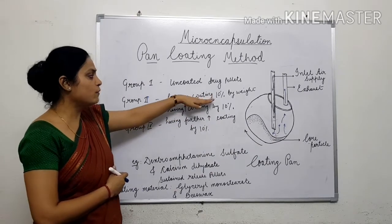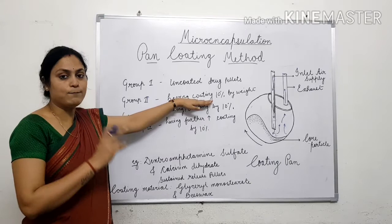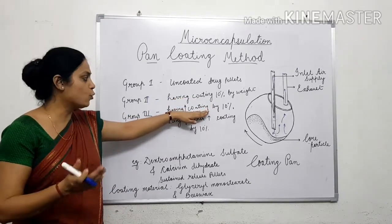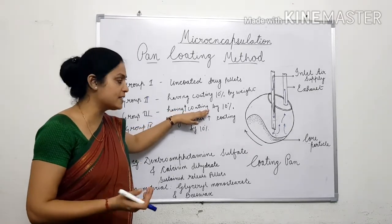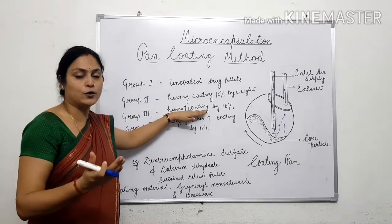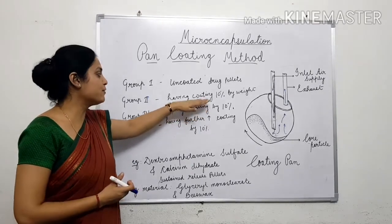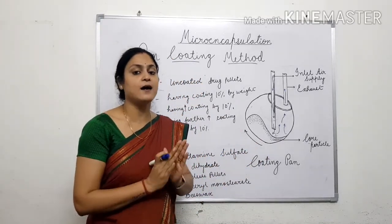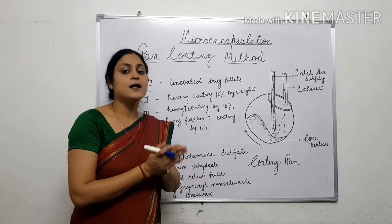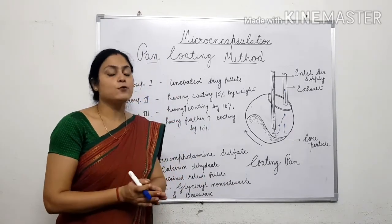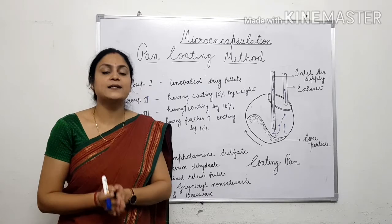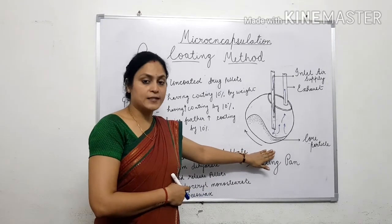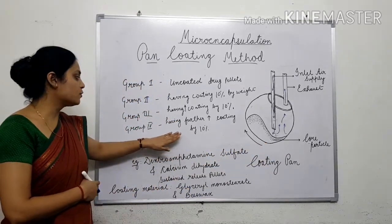The remaining 25 grams of pellets in the coating pan are again coated in a similar way, until a 10% increase in weight is obtained. These last 25 grams of pellets constitute Group 4. So now we have 4 groups of pellets.